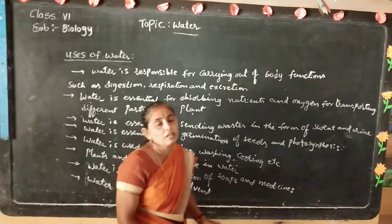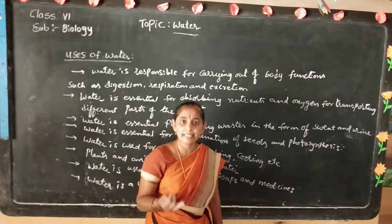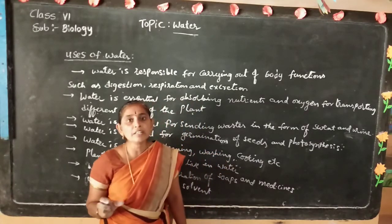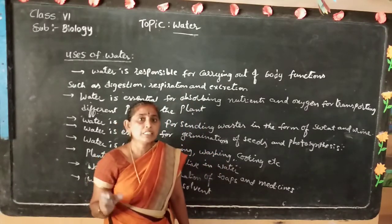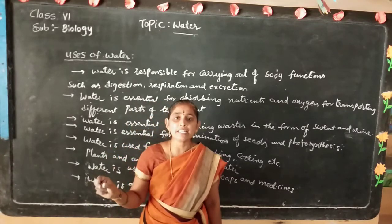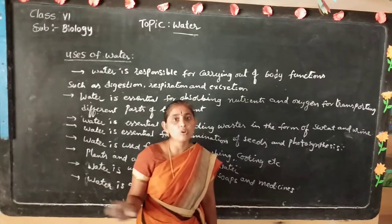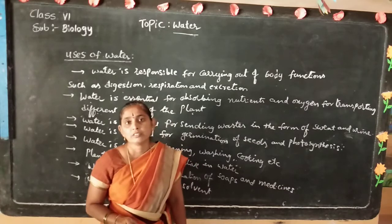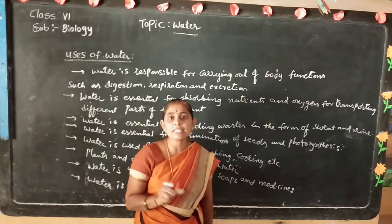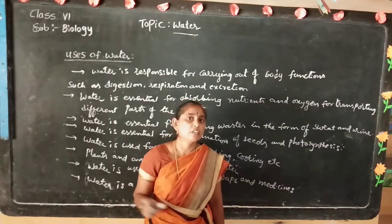Then states of water. Water is available in three states: solid, liquid and gaseous form. The solid form of water — when liquid water is cooled down to 0 degrees centigrade, it forms ice. This process is known as freezing. Liquid form of water converted into solid form is known as freezing.